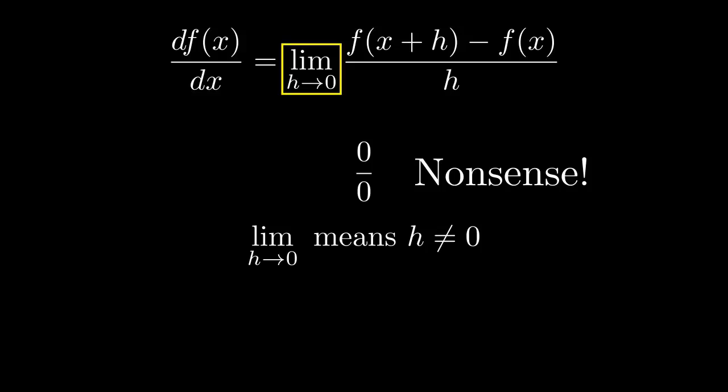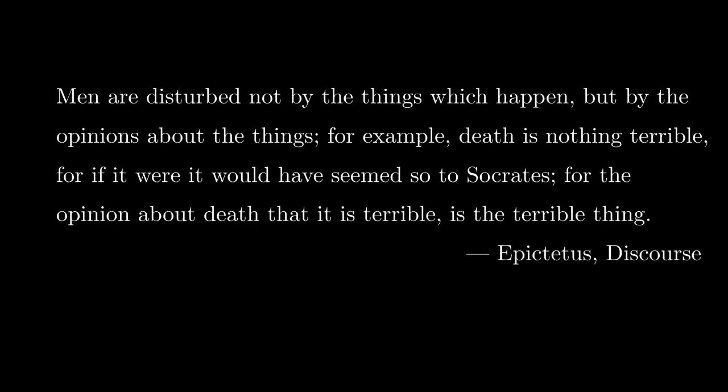I found strange connection between this limit and one of Epictetus's discourses. Epictetus discussed why people are afraid of things they can never experience. To experience something, you need to be alive. When you die, you cannot experience it. That means you cannot experience death. You can be very close to death, but never experience it directly. Because death cannot happen while you are alive. Similarly, when h is equal to 0, the equation dies and becomes nonsense. Therefore, h is never 0.